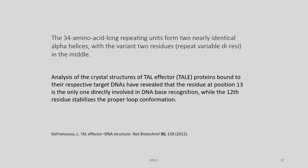These 34 amino acid long repeating units form two nearly identical alpha helices — we spoke about the alpha hairpin in one of the earlier slides. These alpha hairpins are coming from the two nearly identical alpha helices formed by the 34 amino acid long repeat units, and the variant two residues at positions 12 and 13 lie in the middle, where the RVD is located.